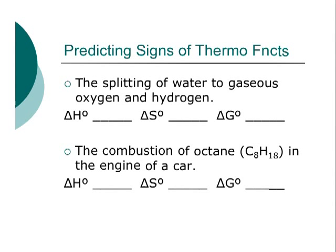First, splitting of water to gaseous oxygen and hydrogen. Now, I'm going to leave it to you to try to write the balanced reaction for H2O gas turning into oxygen gas and hydrogen gas. But when you do that, one of the first things you should notice is that there are more gas moles on the product side than there are on the reactant side. And as we discussed in a previous video, that tells you that the change in the entropy is going to be positive.